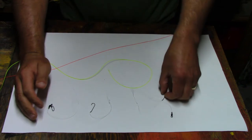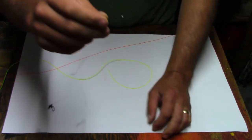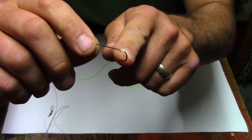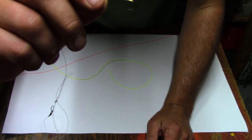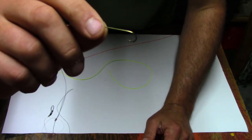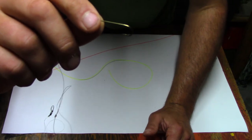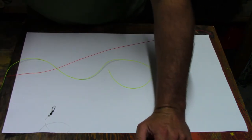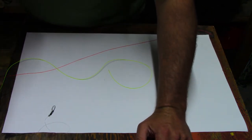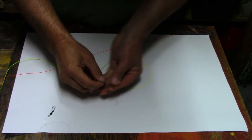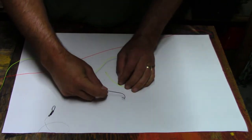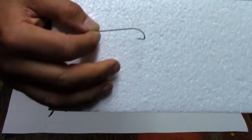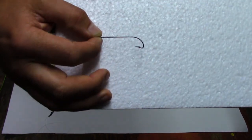For hooks, this one here is about an inch and a half long, and the distance from the tip to the shaft is less than a centimeter, maybe three quarters of a centimeter, eight millimeters. You can go bigger. This is a classic Carlisle hook.